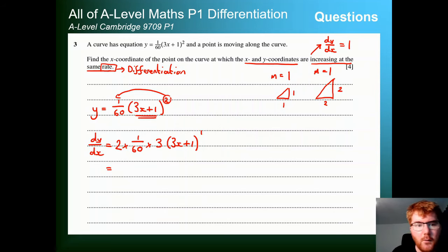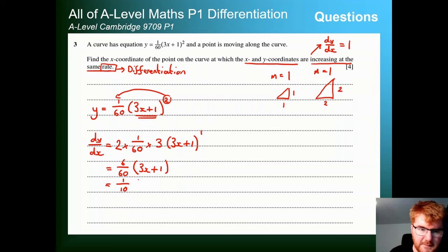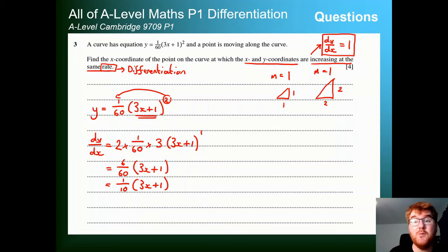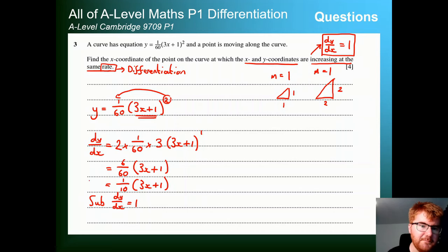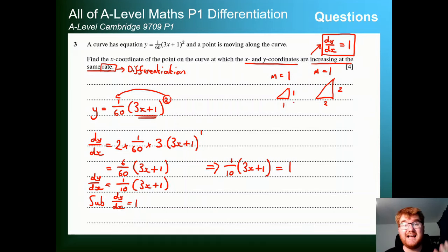Simplifying: 2 times 3 gives 6, so we get 6/60 times (3x + 1) to the power of 1, which is just (3x + 1). And 6/60 simplifies to 1/10. So dy/dx equals (1/10)(3x + 1). Now we use the fact that we want dy/dx = 1, since the x and y-coordinates are increasing at the same rate. So we substitute: (1/10)(3x + 1) = 1.